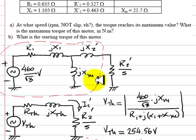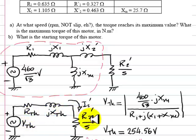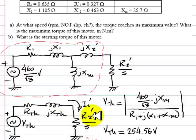How do we find the Thevenin equivalent of all these parts of the circuit? We find the Thevenin equivalent — VTh, RTh, XTh — as seen by the gap power resistor R2' over S. For maximum gap power, this resistance has to be equal, as we saw in Circuits 2, to the magnitude of this impedance.